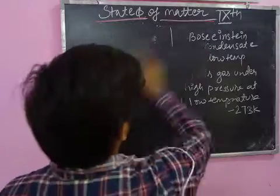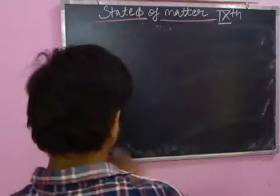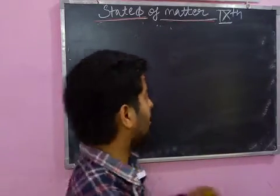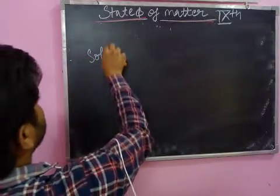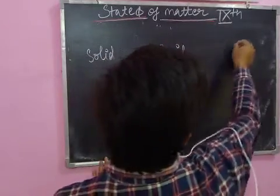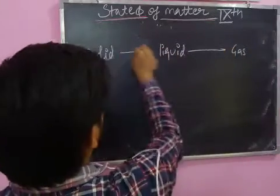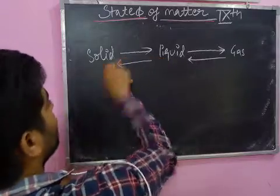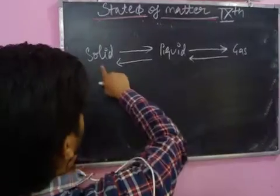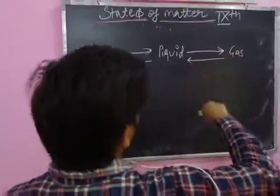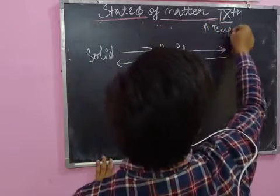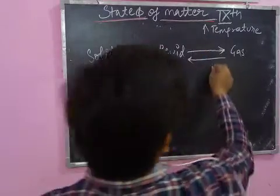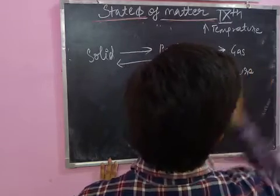Now we will see the inter-conversion of the three states of matter. These three states are inter-convertible. Solid converts into liquid, and liquid converts into gas — this can be done by increasing temperature. Gas converted into liquid and into solid can be done by increasing pressure.